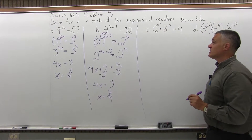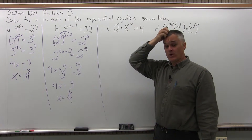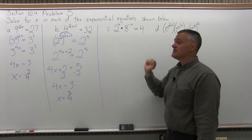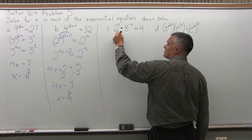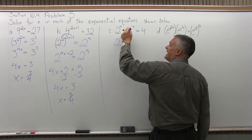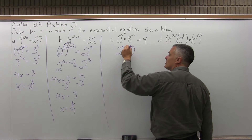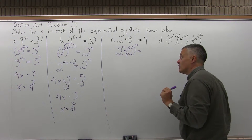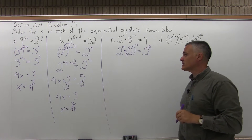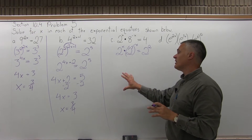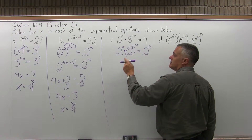Part C: solve the exponential equation 2 to the x power times 8 to the negative x power equals 4. First, make the base the same on both sides — both sides can be written as 2 to some power. Leave 2 to the x as is. 8 can be written as 2 to the third, so 8 to the negative x becomes 2 to the third to the negative x. And 4 on the right can be written as 2 to the second. Now on the left I have a power to a power.